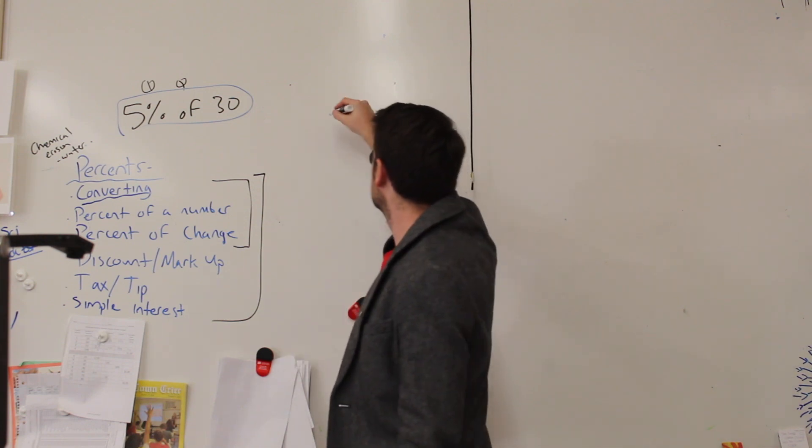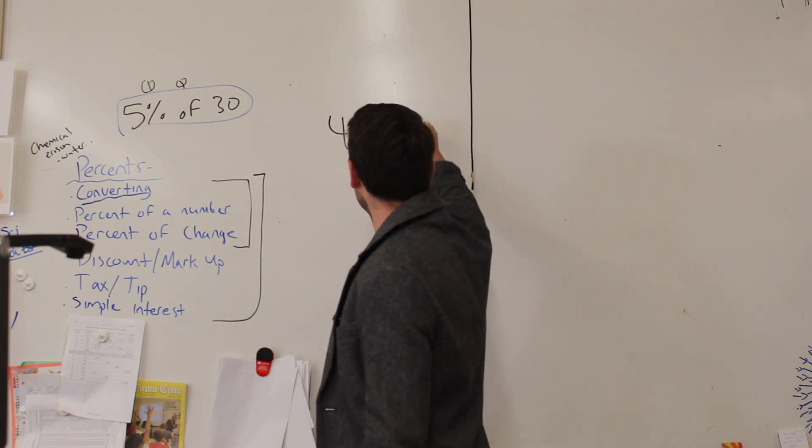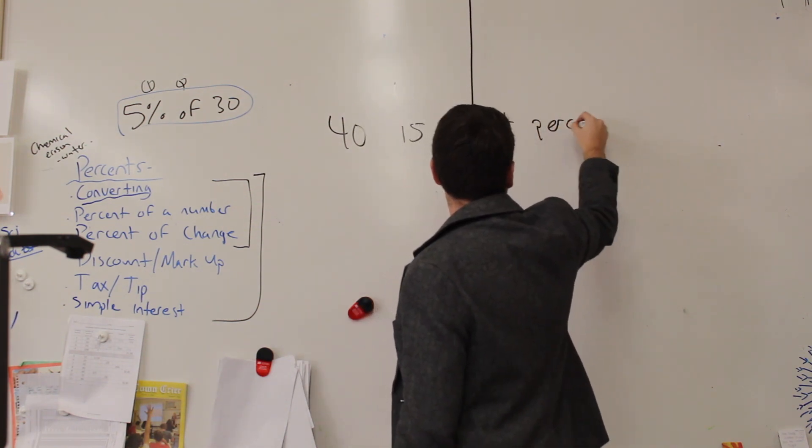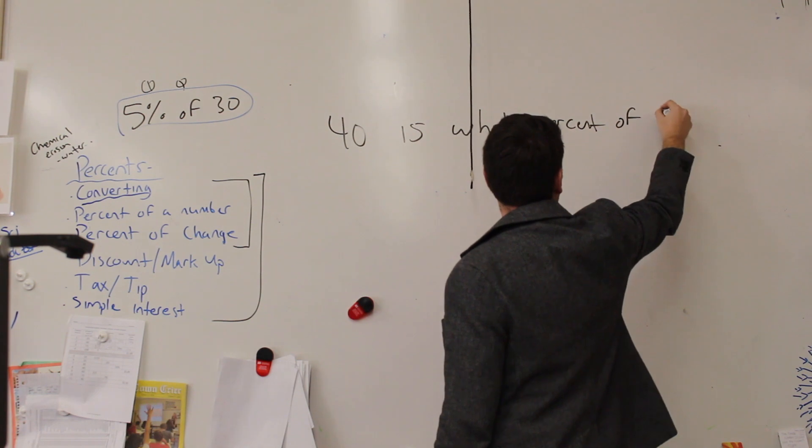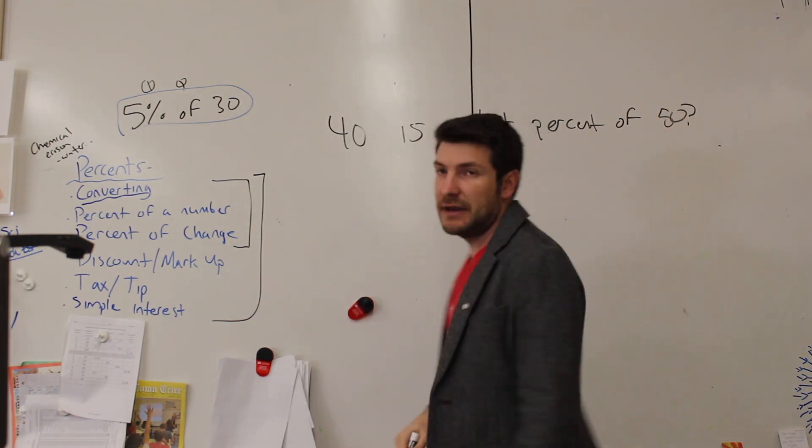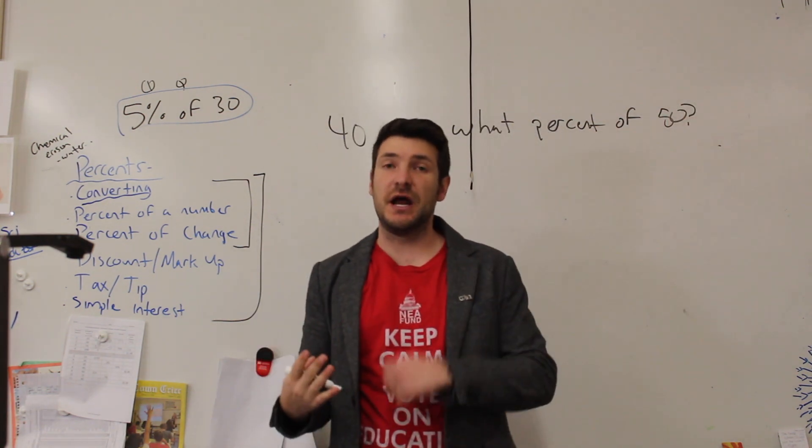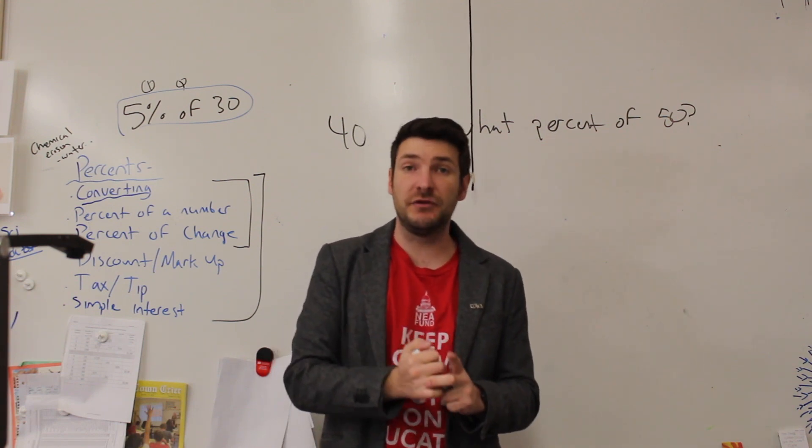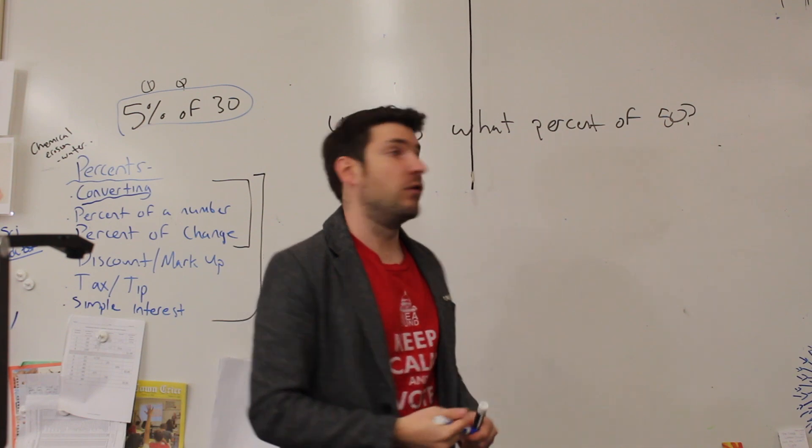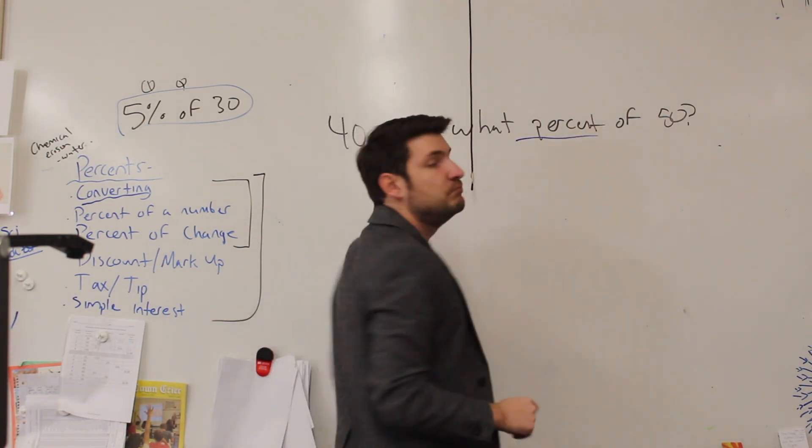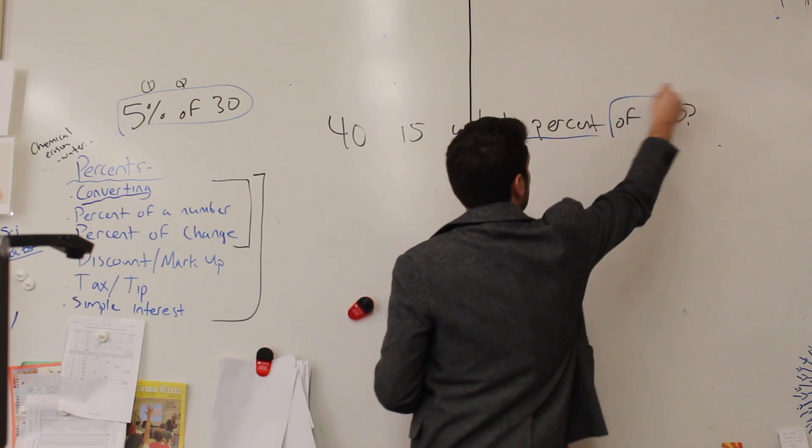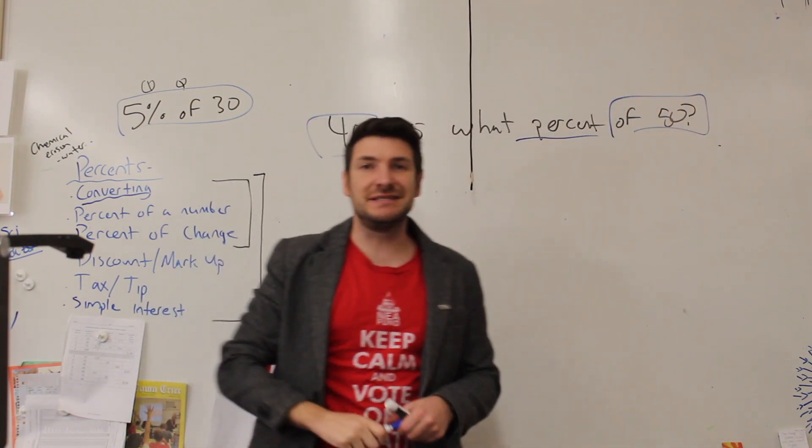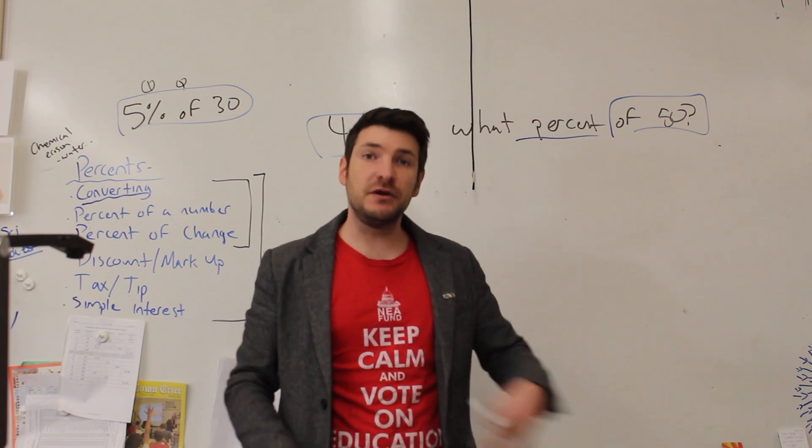So let's give ourselves an example. Let's say we have 40 is what percent of 50. Now the three things we need in percent of a number are part, whole, and percent. And in this problem we have two of the three. We're looking for the percent but we have the whole and we have the part. Look at it this way. It's like a test. 40 out of 50, what did you get?